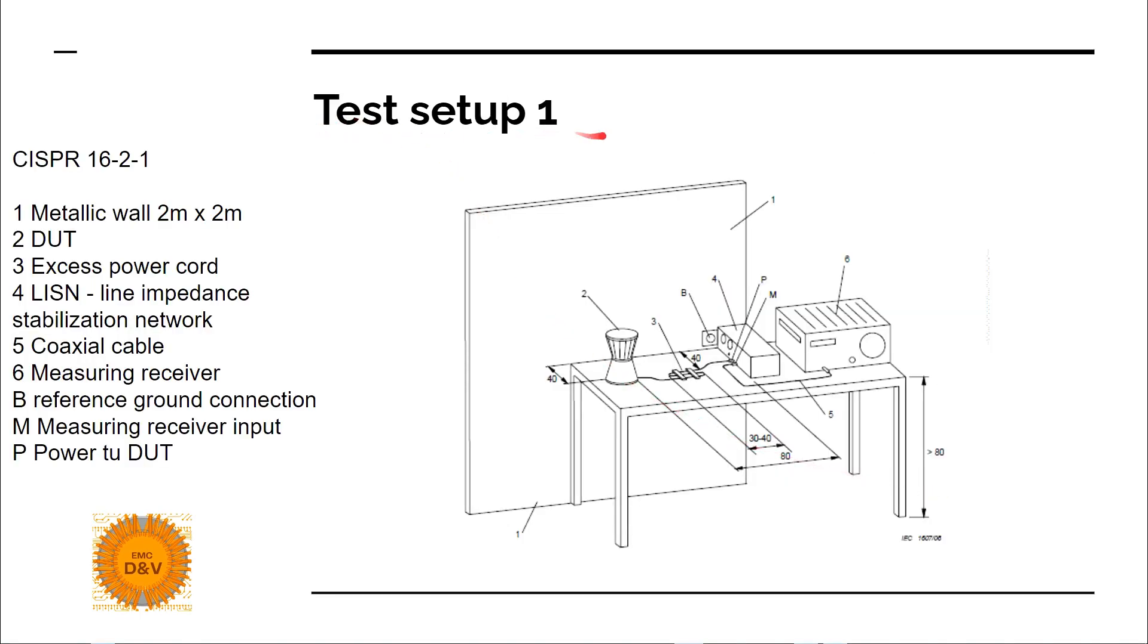Test setup example number one. This is an example of benchtop device testing. What is needed is a 2x2 meter metal wall as a low reference impedance for the common mode current return, usually made of stainless steel. And then a LISN, Line Impedance Stabilization Network, from which the device must be fed. It will provide a well-defined RF impedance for the DUT, device under test, and keep away unwanted interference from the mains and from the device to the mains.